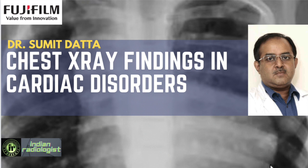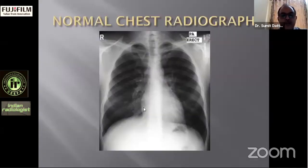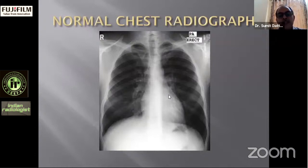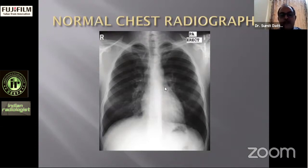Chest X-ray PA view, integrating full inspiration. The cardiac silhouette border is formed mainly by the right atrium; superiorly there is a contribution of the superior vena cava, and inferiorly there is a contribution from the inferior vena cava. The left heart border is basically formed by the left ventricle, with a superior contribution of the aortic knuckle and a small concavity known as the pulmonary bay, formed by the main pulmonary trunk.